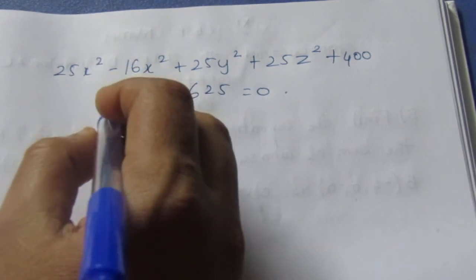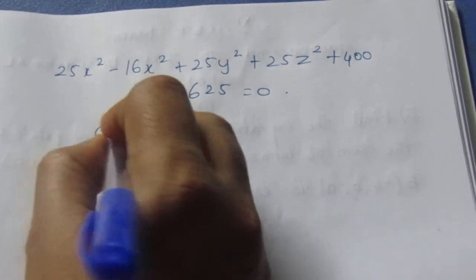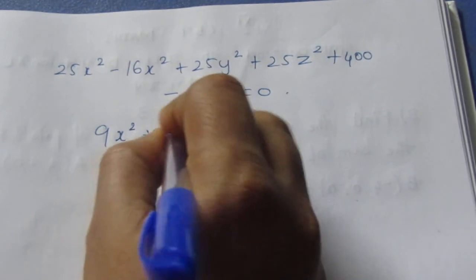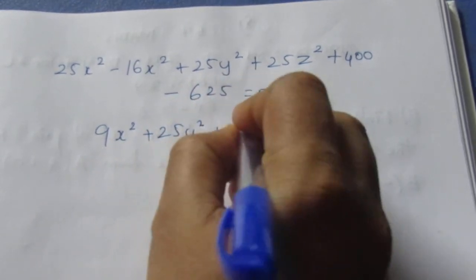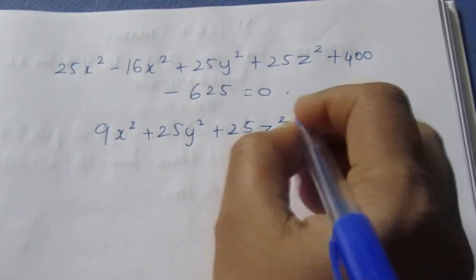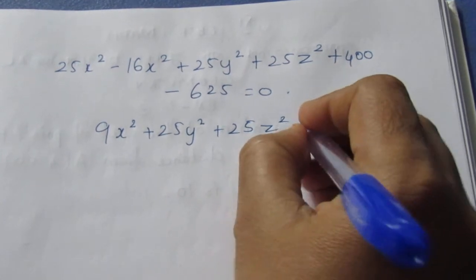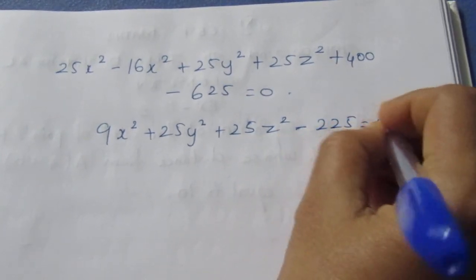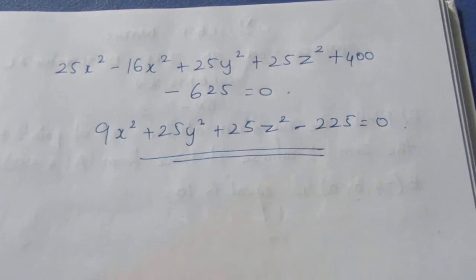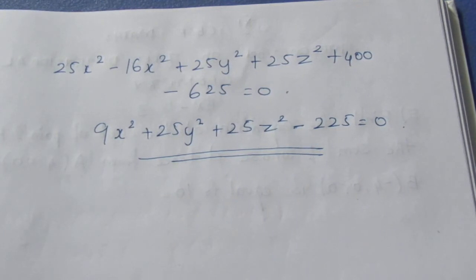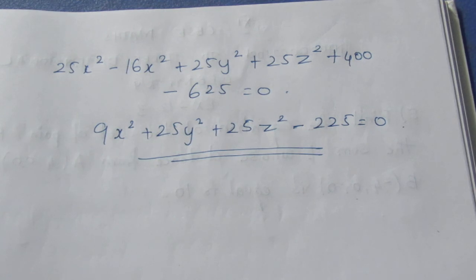Solving the like terms, it becomes 9X² + 25Y² + 25Z² - 225 = 0. We can't simplify further. This is the required equation for the set of points P when the sum of distances from the two points A and B is equal to 10. That's all — thank you.